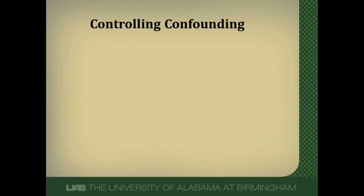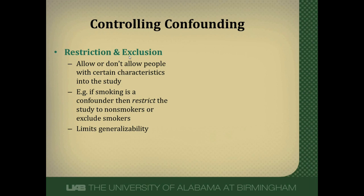Restriction and exclusion are closely tied to each other — we either allow or don't allow people with certain characteristics into a study. For example, if we consider smoking to be a confounder, using restriction we would restrict the study only to non-smokers, or exclude smokers. The result is a study full of only non-smokers, so smoking is no longer a confounder. The problem is this limits generalizability, since the broader population includes smokers.